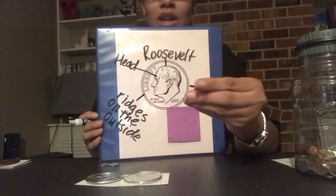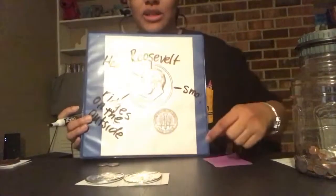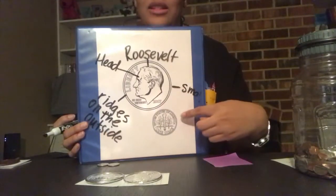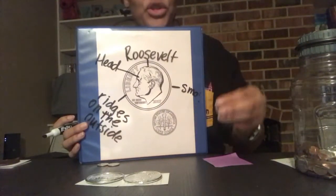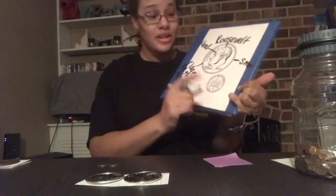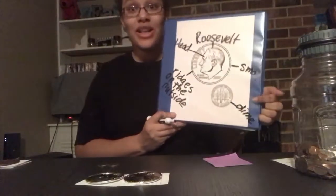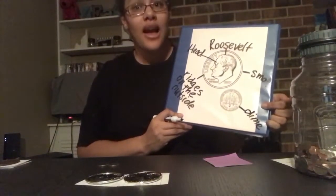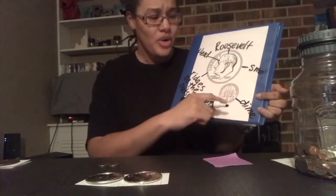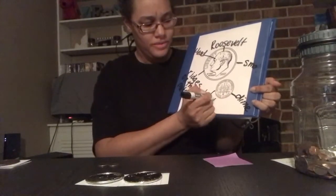How about on the back, or the tail side? What do you notice about the tail side? This is the head side and then the tail side. Do you see the word 'dime' on the tail side? Yes! That word says 'dime.' So if you forget what coin it is, you can look at the tail side and see it's a dime. There's also a torch and some branches on the tail side.